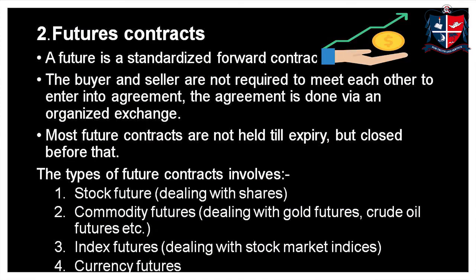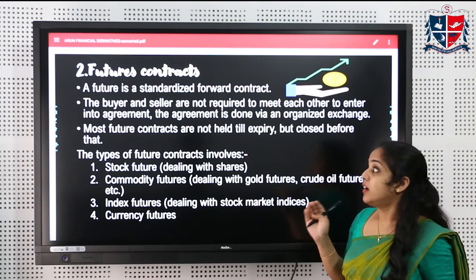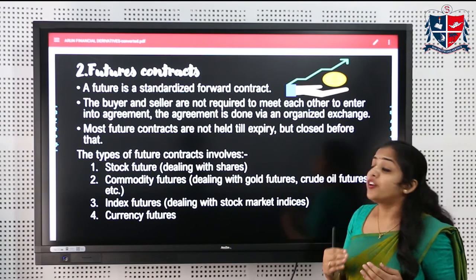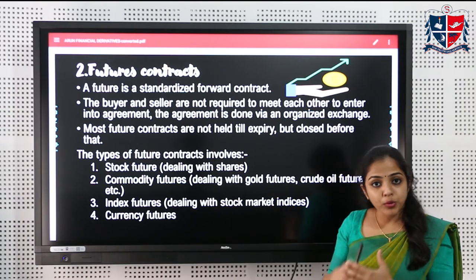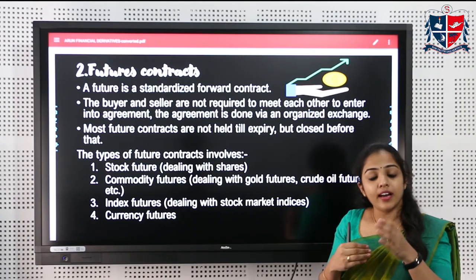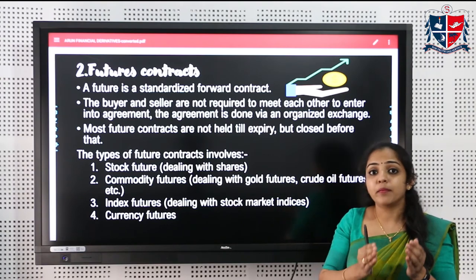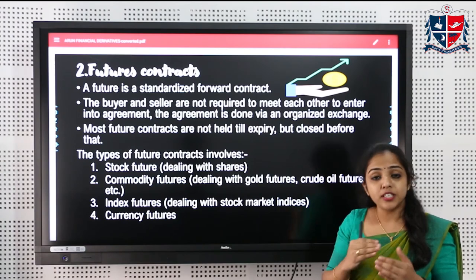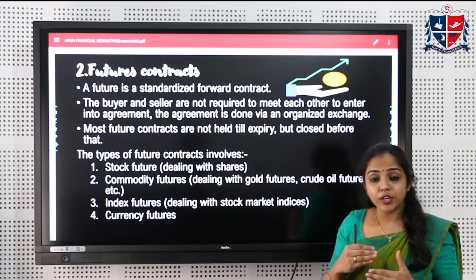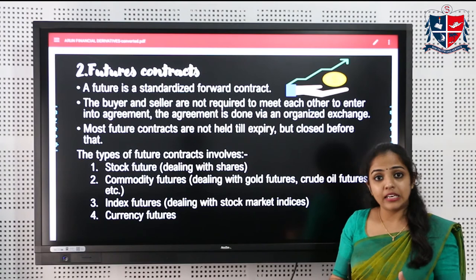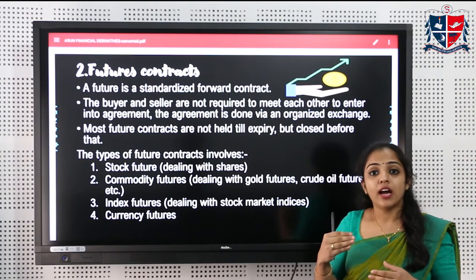Future contracts are the standardized form of forward contract. Both the buyer and seller come together through a recognized stock exchange and agree to buy or sell an underlying asset at a predetermined price on a predetermined date. It is a standard form of contract.